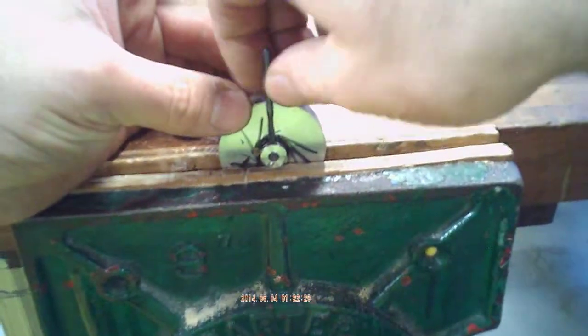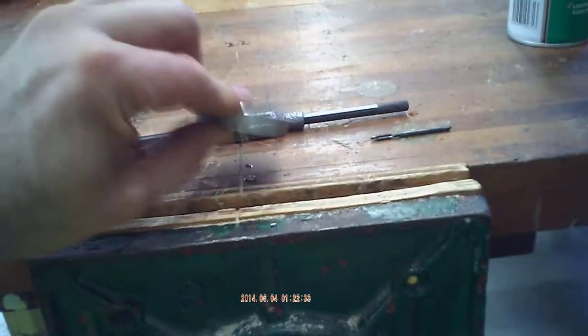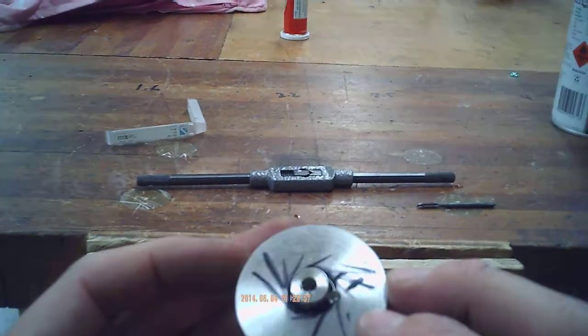So guys, just go down until it seats, 2 or 3 turns out, take the handlebars off, remove the tap by hand, and there we have our tapped flywheel.